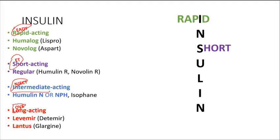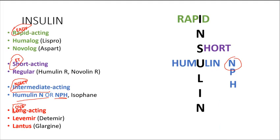The U in INSULIN is right at the center, representing intermediate acting insulin — your Humulin N or NPH. I use the U to form Humulin and the N to form NPH. Finally, Love — L — reminds me of Long acting. So L is used to form my long acting insulin.